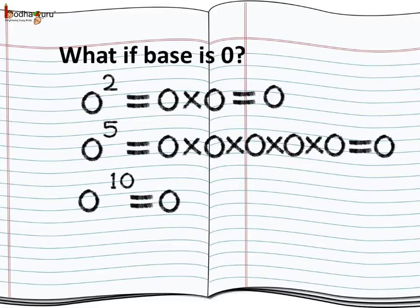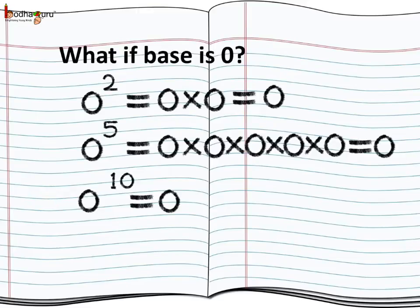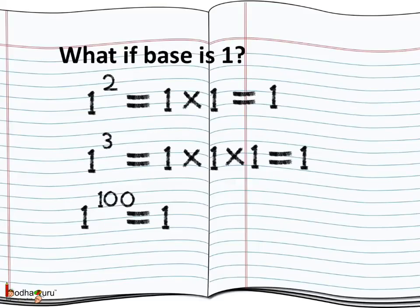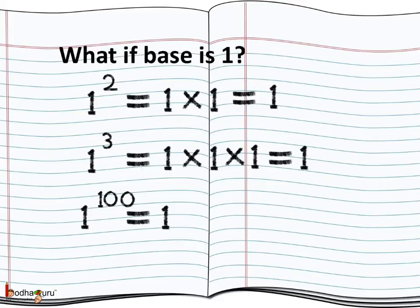Now, what if the base is 0? No matter how many times you multiply 0, the answer would be 0. So 0 to the power 2 is equal to 0, 0 to the power 5 is also equal to 0, and 0 to the power 10 is also equal to 0. And if the base is 1, no matter how many times you multiply 1, you get 1. Like, 1 squared equals 1, 1 cubed is also equal to 1, and 1 to the power 100 is also equal to 1. Thus, 1 to the power any whole number is 1.